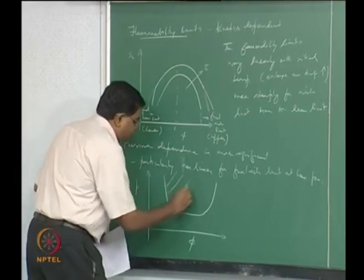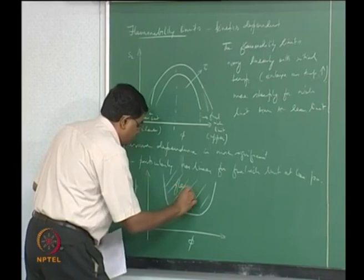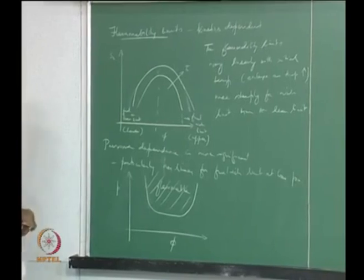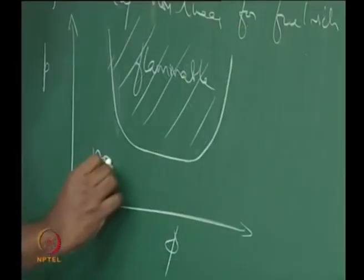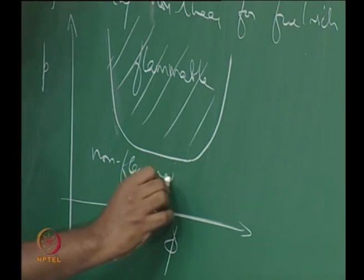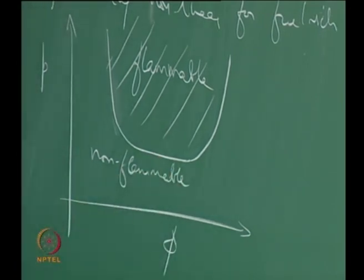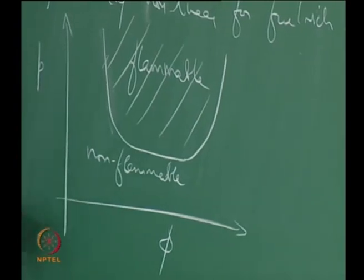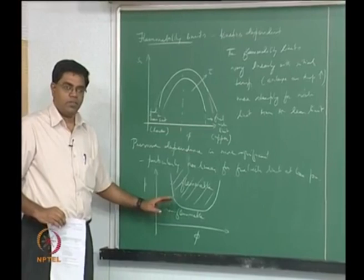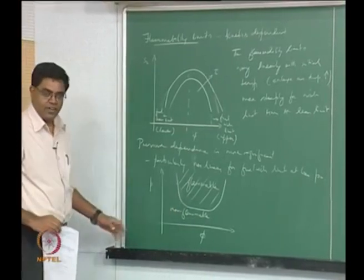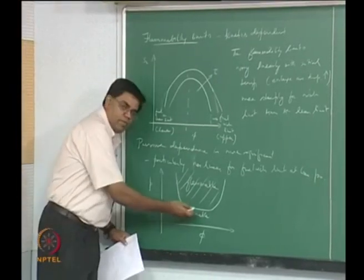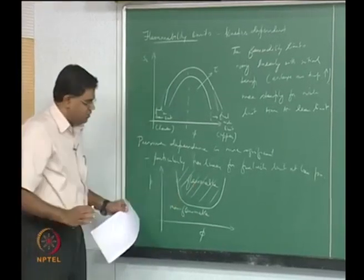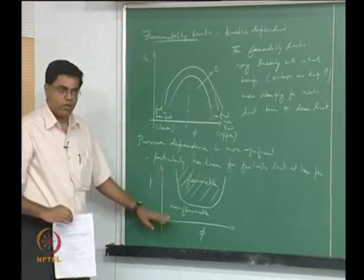This gives you a flammable region and a non-flammable region. You have to be careful reading texts on this: in conventional British English, 'inflammable' actually means it burns — it is not non-burning. That is why we use 'non-flammable' rather than 'inflammable.' To avoid the controversy, just use 'flammable' and 'non-flammable.'